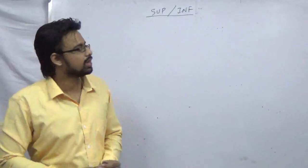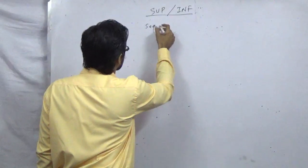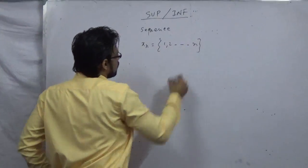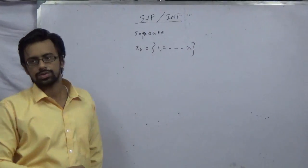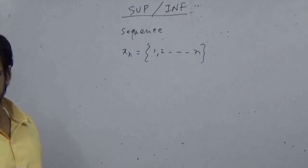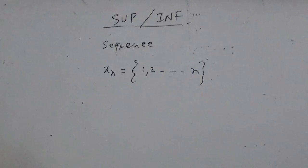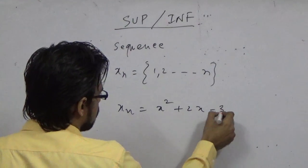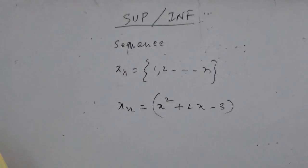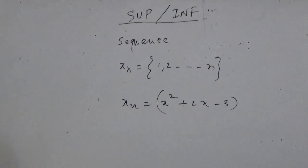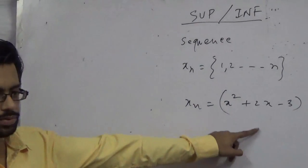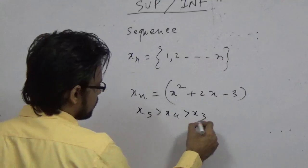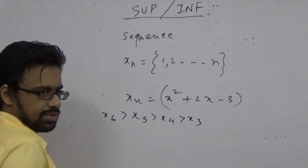How are we going to do it? First, they will give you a sequence. General sequences like x_n equal to 1, 2, dot dot dot. Can anyone tell whether it is an increasing or decreasing sequence? It is a simple increasing sequence because the second term is greater than the first. If you keep putting 3, 4, 5, 6 — like x5 is greater than x4, greater than x3 — so this is also an increasing pattern.